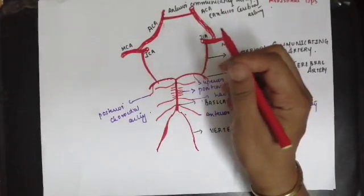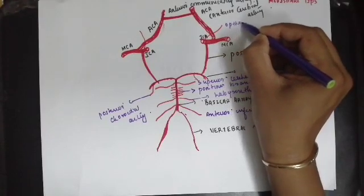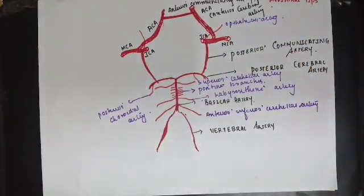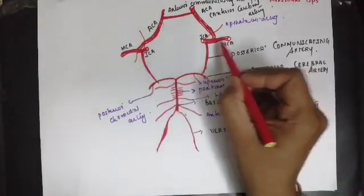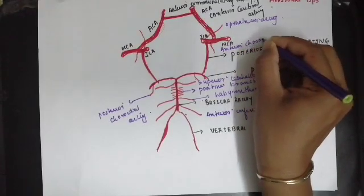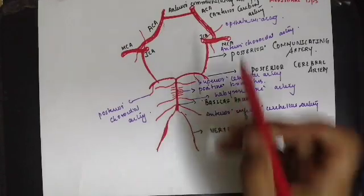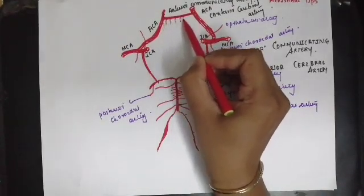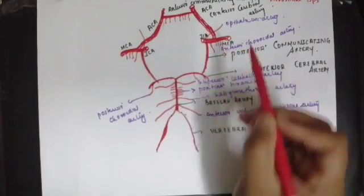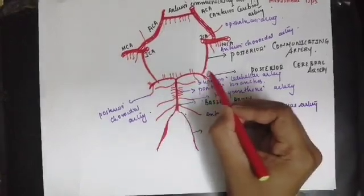From the internal carotid artery you have the ophthalmic artery. You also have the anterior choroidal artery emerging from the internal carotid artery. There are also perforating branches: the anteromedial group of arteries and the anterolateral group.